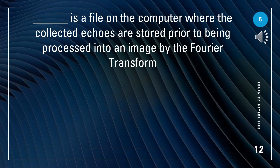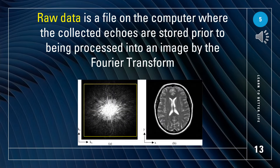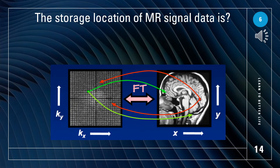A file on the computer where the collected echoes are stored prior to being processed into an image by the Fourier transform — what is the term? Raw data, as can be seen in the picture on the left. The storage location of MR signal data is K-space.